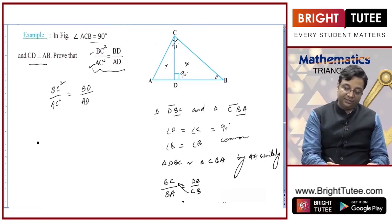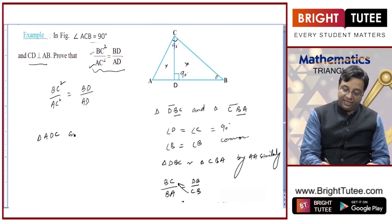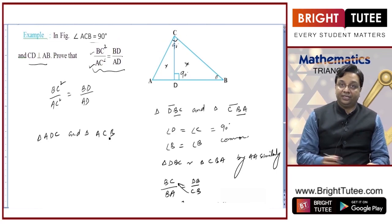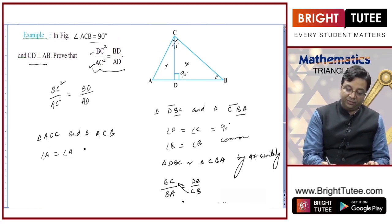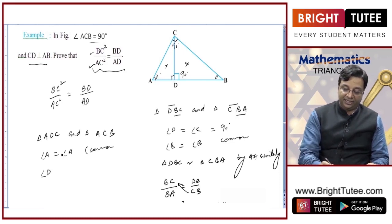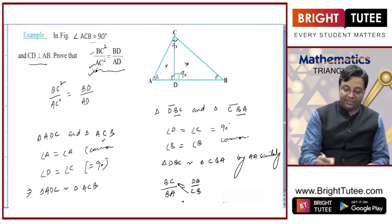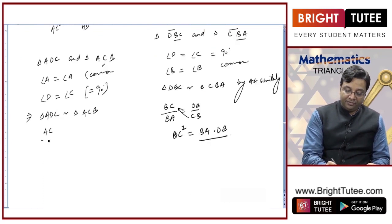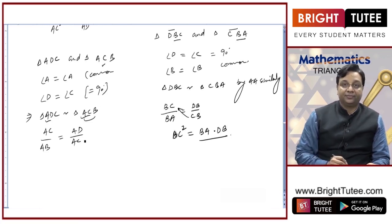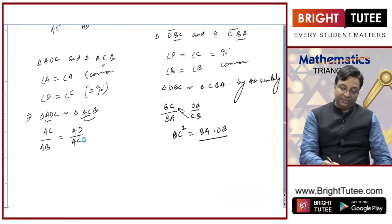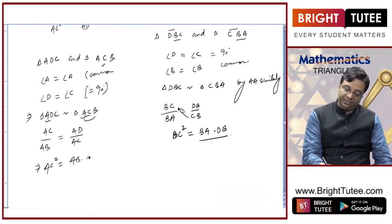Similarly, triangle ADC and triangle ACB are similar because angle A is common in both, and angle D in triangle ADC equals angle C in triangle ACB — both are 90 degrees. So triangle ADC is similar to triangle ACB, giving AC/AB = AD/AC, and hence AC² = AB · AD.